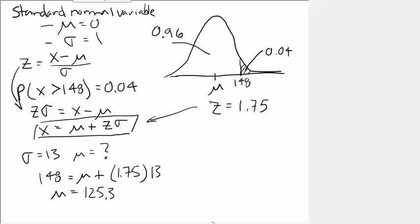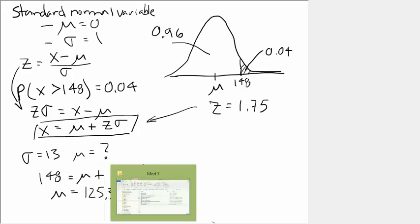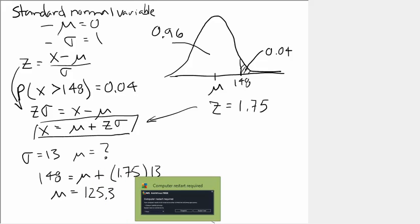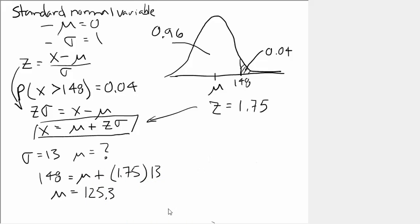Okay, in another question, they say... Where did my pen go? Come back. There it is. They say, well, we know what the population mean is in this case. We'll call this problem B. This was problem A. In problem B, we know that the population mean is 133.